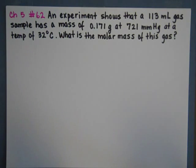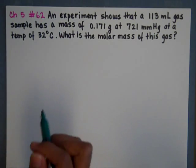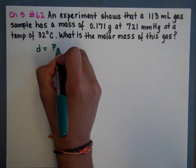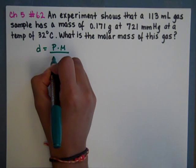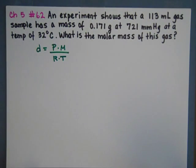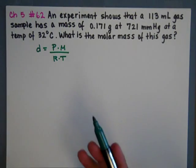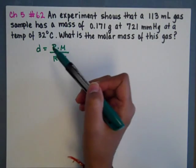If you remember, we have a special formula that involves molar mass and it is density equals pressure times molar mass over RT. It's a derivative of the PV equals nRT, but instead of n we're going to have molar mass and density.